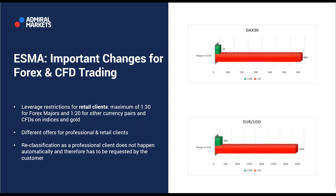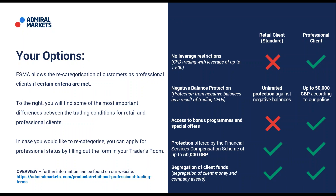Here is a quick overview of the ESMA changes from last year in August. For example, the DAX has a leverage reduction of only 1 to 20, meaning you need much more margin to trade the same size DAX contract. The euro/USD has leverage of 1 to 30. If you would like higher leverage, you have different options, including the professional client status. Contact our customer service for more details.